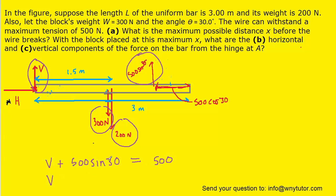If we simply subtract 500 sine 30 over to the right hand side we're going to be able to get the value of V. When we do that we get 250 Newtons, so this is the correct answer to part C.